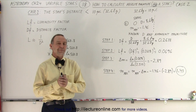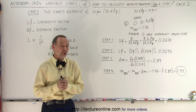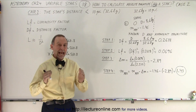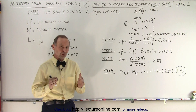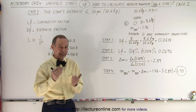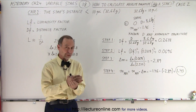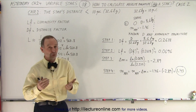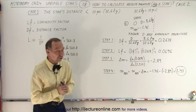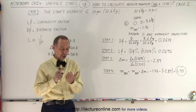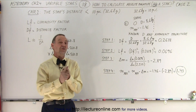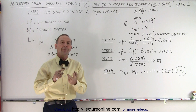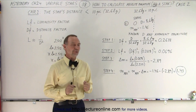Welcome to White Lecture Online. In this video we're going to calculate the absolute magnitude of a star that is closer than 10 parsecs, or 32.6 light years away from us, if we know the distance to the star and the apparent magnitude.